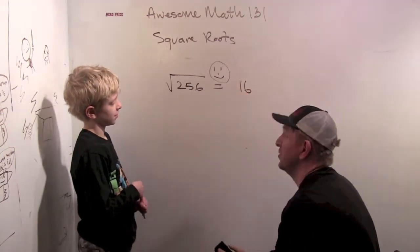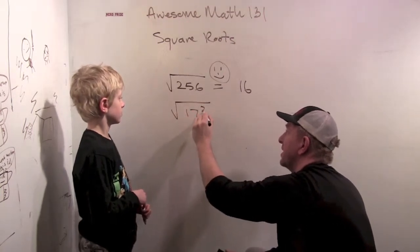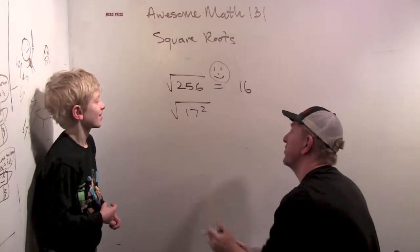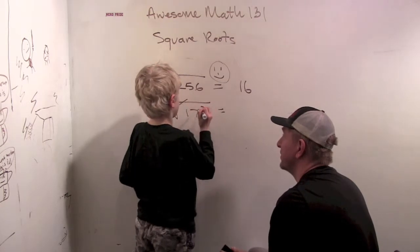Wow, 16. What is the square root of 17 squared? 17. How come you didn't have to multiply it out? Because the square root and the square cancel.